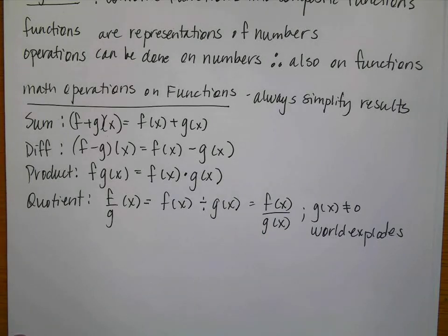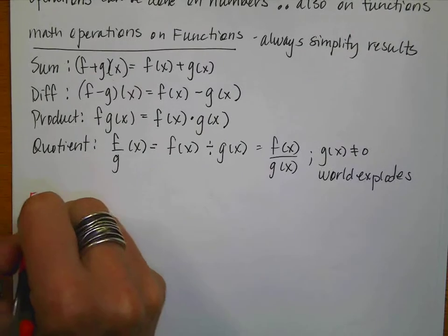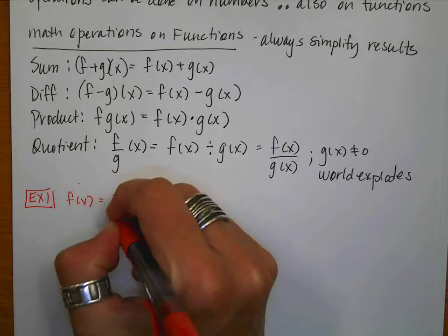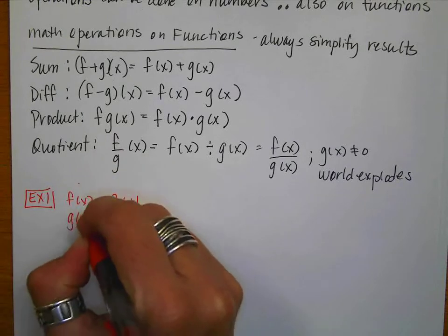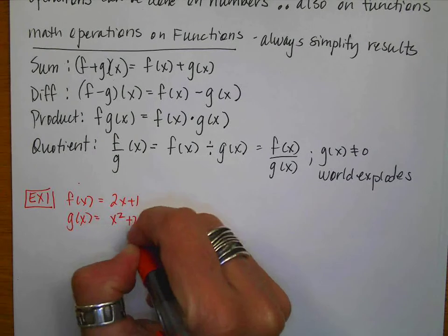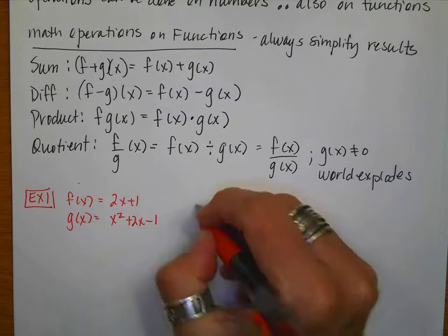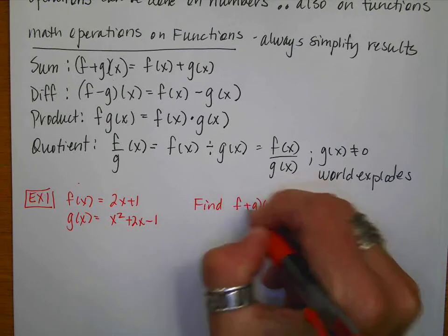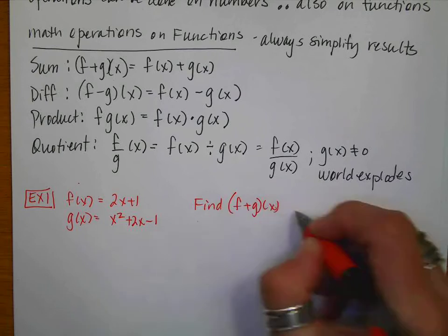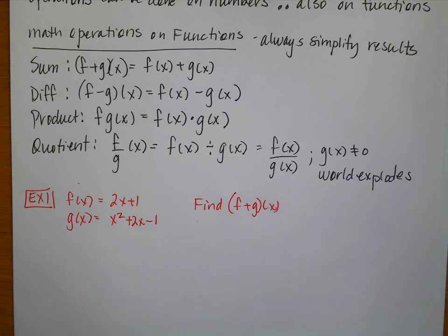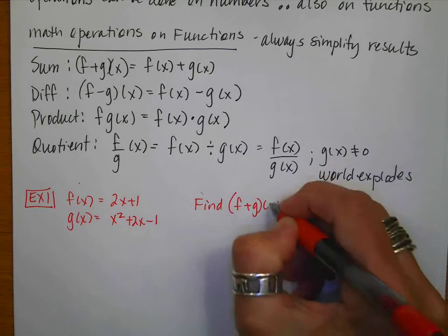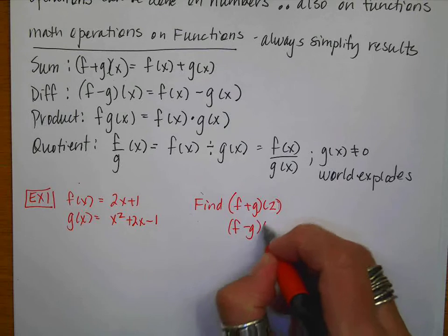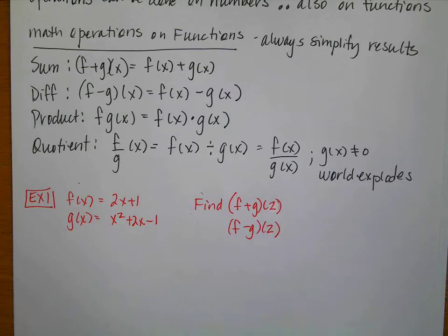Let's jump in with some examples. For our first example, f(x) = 2x + 1 and g(x) = x² + 2x − 1. I want to find (f + g)(x) and evaluate the sum at 2, and then find (f − g)(x) and evaluate it at 2 as well.